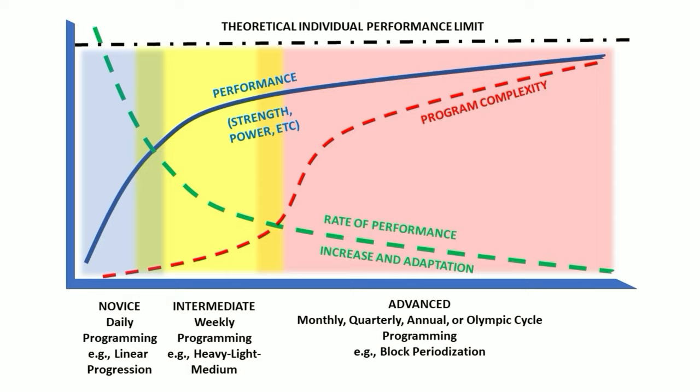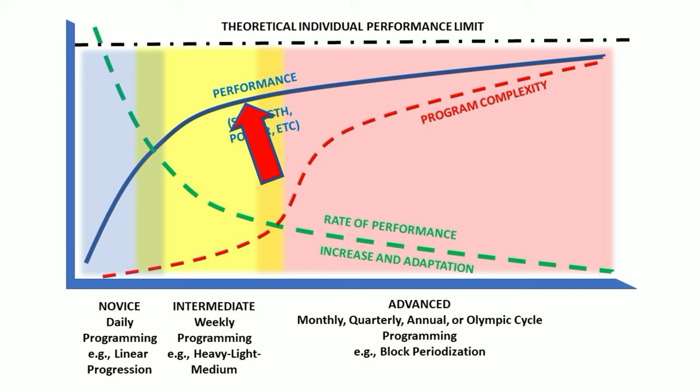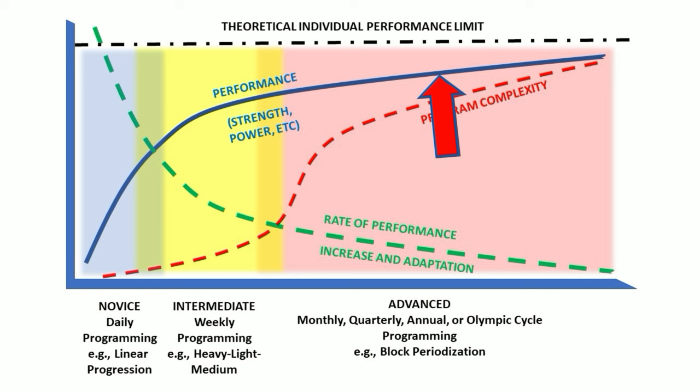In strength programs, performance improves rapidly and linearly early on during the novice phase, when programming is simple. As strength improves, rate of adaptation falls, and programming must become more complex in the intermediate programming range. As more time goes by, even moderate gains of performance come at the cost of increased time and training complexity, and the athlete is in advanced programming.